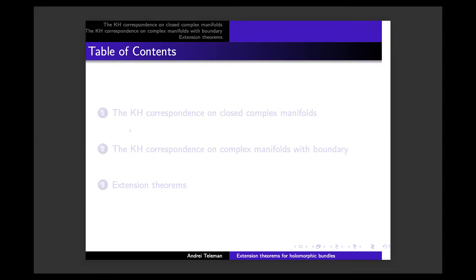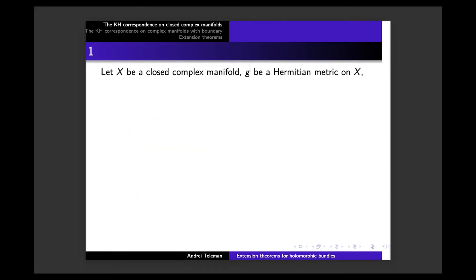The first section is about the Kobayashi-Hitchin correspondence on closed complex manifolds. By closed, I mean compact without boundary. This is a classical topic in mathematical gauge theory which had important — I would say fundamental — consequences in differential topology.